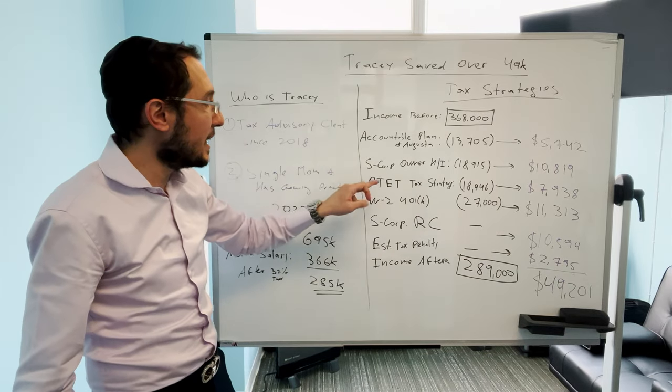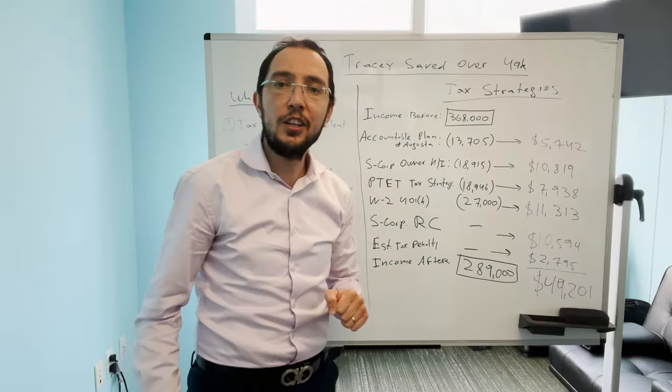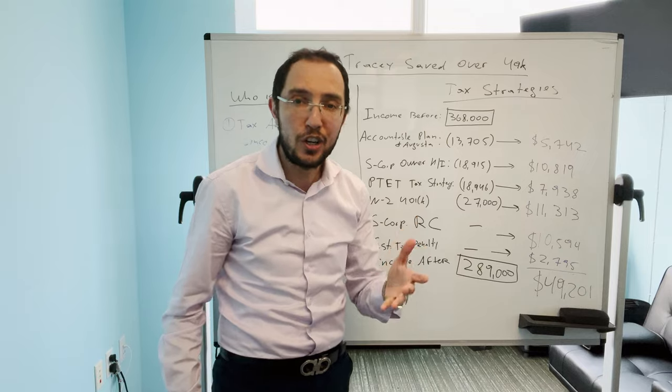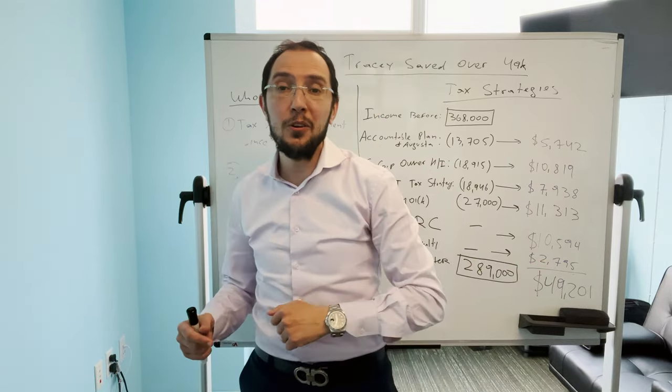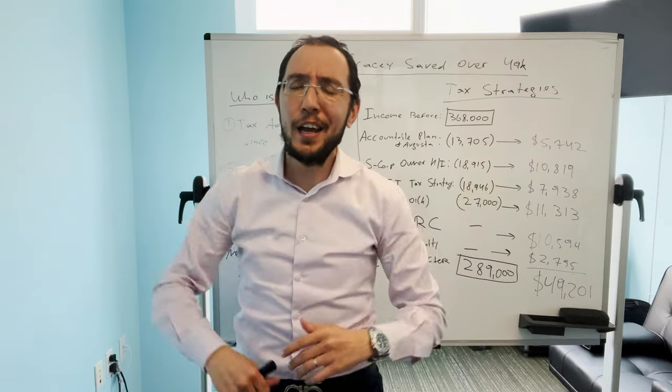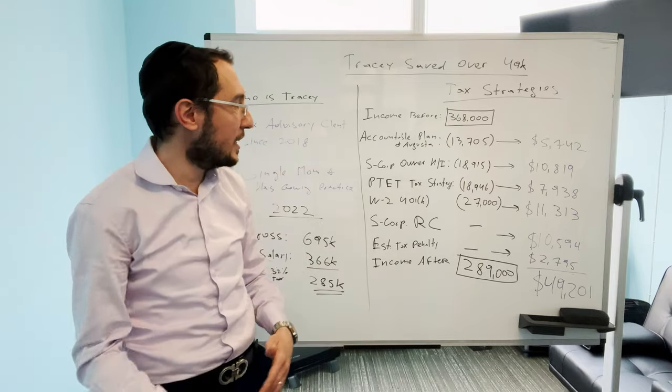The next thing is S-Corporation owner health insurance, $18,915 in deduction. Let me explain to you. If you own an S-Corporation and you're like, oh yeah, I deduct my S-Corporation health insurance, no problem, I do it, I take it as a deduction, this is a good deal, great.